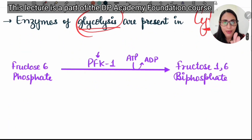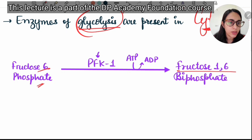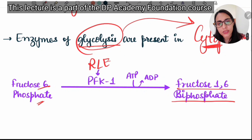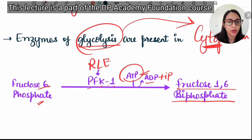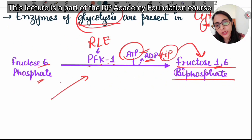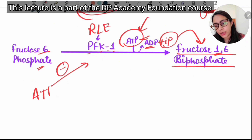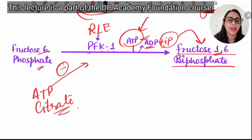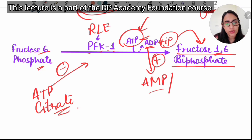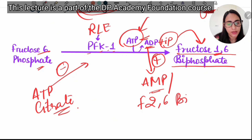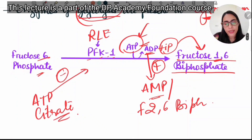The rate-limiting step of glycolysis is the conversion of fructose-6-phosphate to fructose-1,6-bisphosphate by phosphofructokinase-1. ATP is broken down to ADP and one phosphate is released and attached to the first unit. This reaction is inhibited by high ATP levels (high energy state) and is stimulated by ADP, AMP, or fructose-2,6-bisphosphate when the body is in a low-energy state.